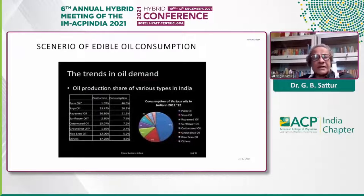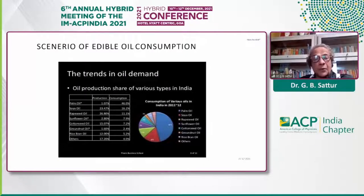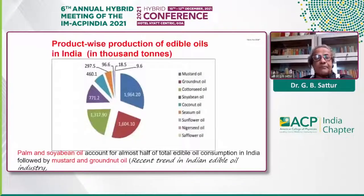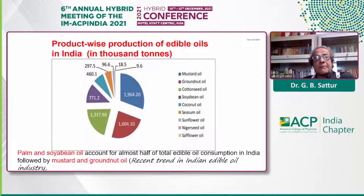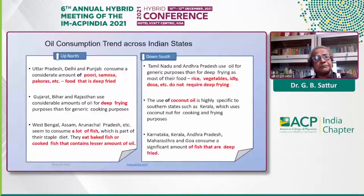Now let us see what exactly is the scenario in India. You'd be surprised to know that the maximum used oil — just less than 50% — is palm oil, followed by soybean oil, then canola oil. Palm oil is not produced in India; it is imported. Amongst oils produced in India, mustard oil is the largest, followed by groundnut oil.